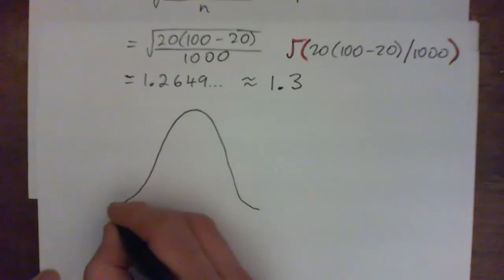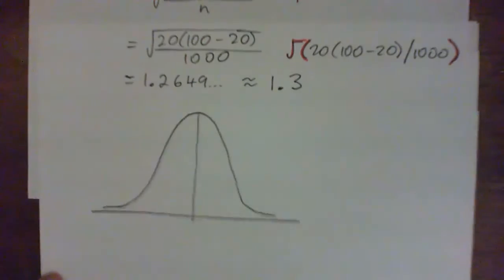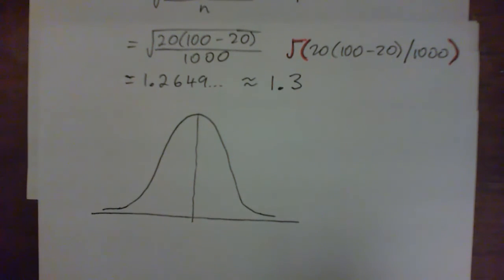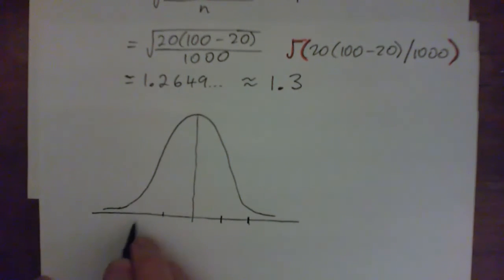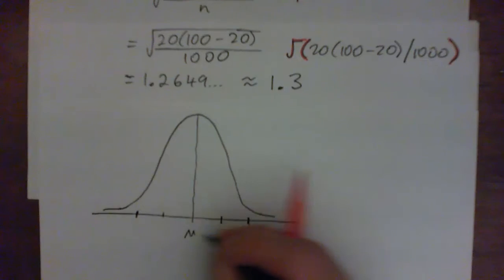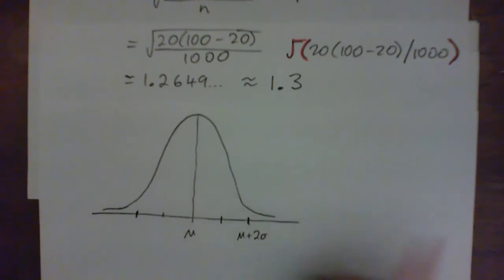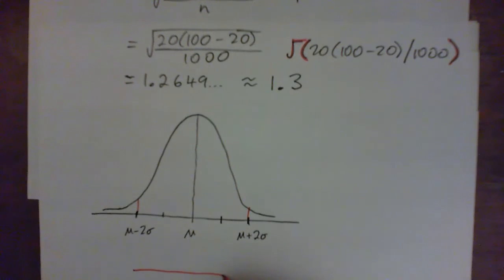So we'll draw a bell curve. We go up one standard deviation, then another, then down one standard deviation, then another. For all normal distributions, when you take the mean and add two standard deviations, then take the mean and subtract two standard deviations, you end up with 95% of observations within two standard deviations of the mean. That's the way the normal distribution works.